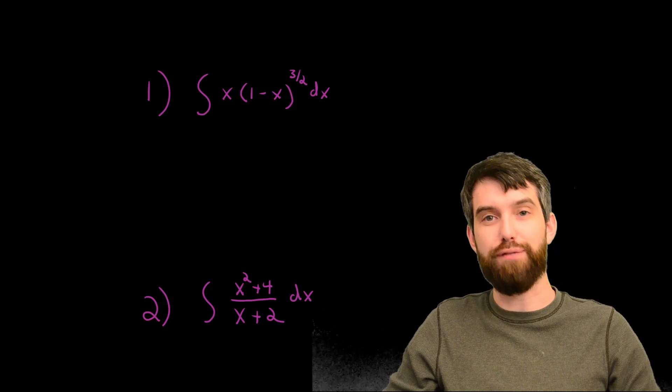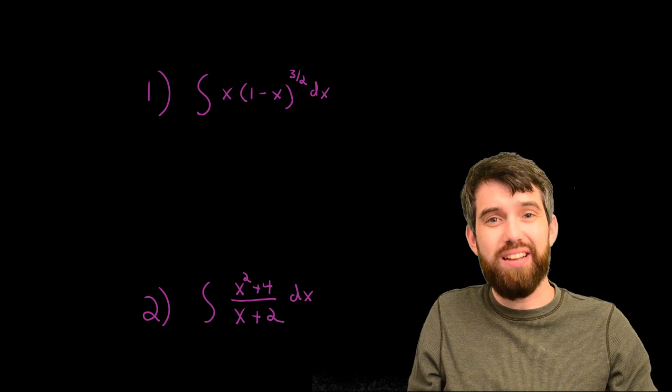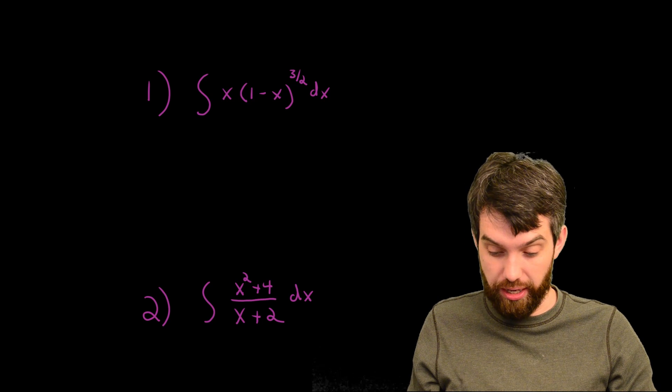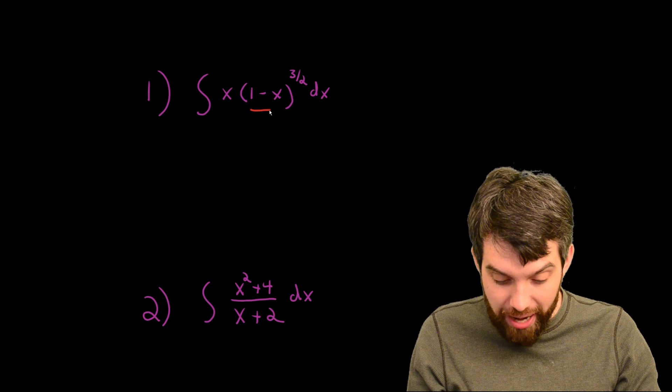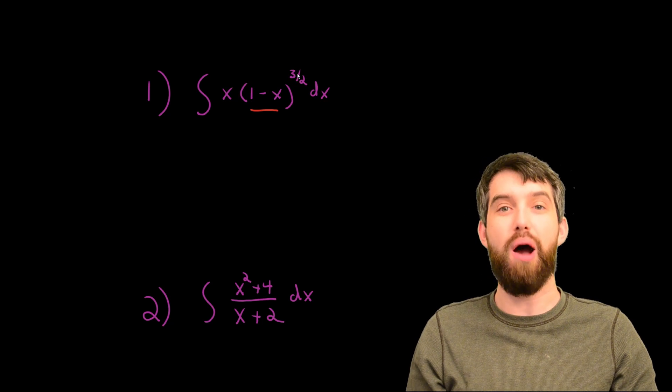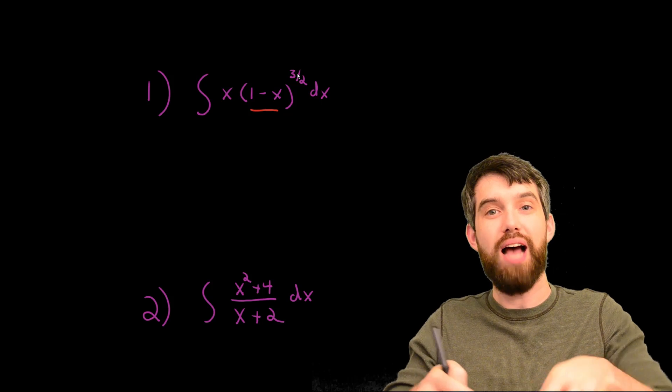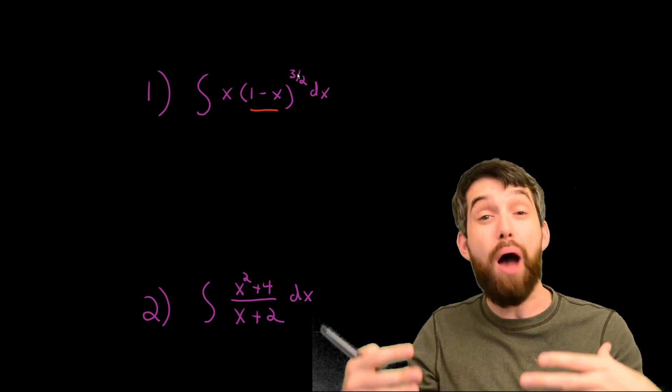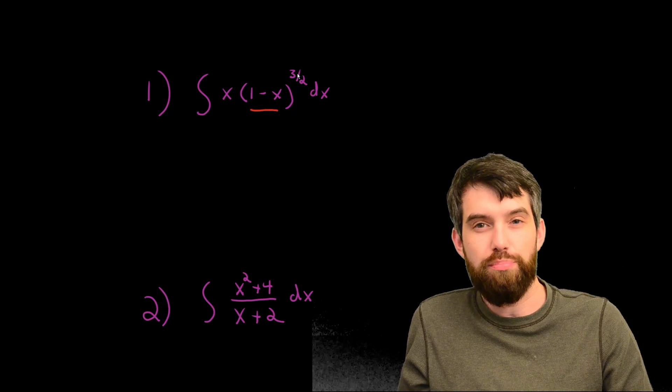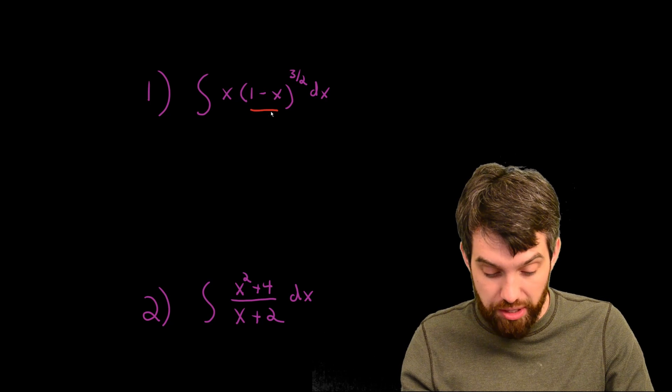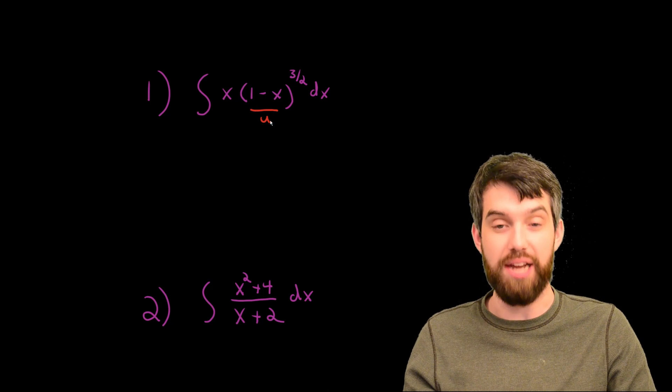So let's look at this first one. What we have is a clear inside function. If I look at this 1 minus x that's raised to this power of 3 halves, there's this inside function, the 1 minus x, and there's this outside function to the power of 3 halves. So it's very natural that I'm going to assign this inside to be my u.